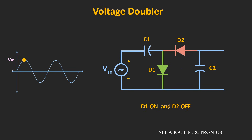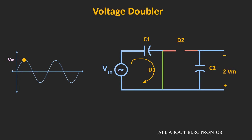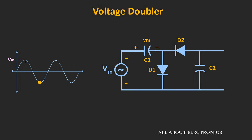Here we are assuming all diodes are ideal, so we can replace them by their equivalent circuit — diode D1 acts as a short circuit. Through this path, capacitor C1 will get charged up to the peak amplitude of the AC input signal. That means capacitor C1 will get charged up to voltage Vm. So after the first positive half cycle, the circuit looks like this.